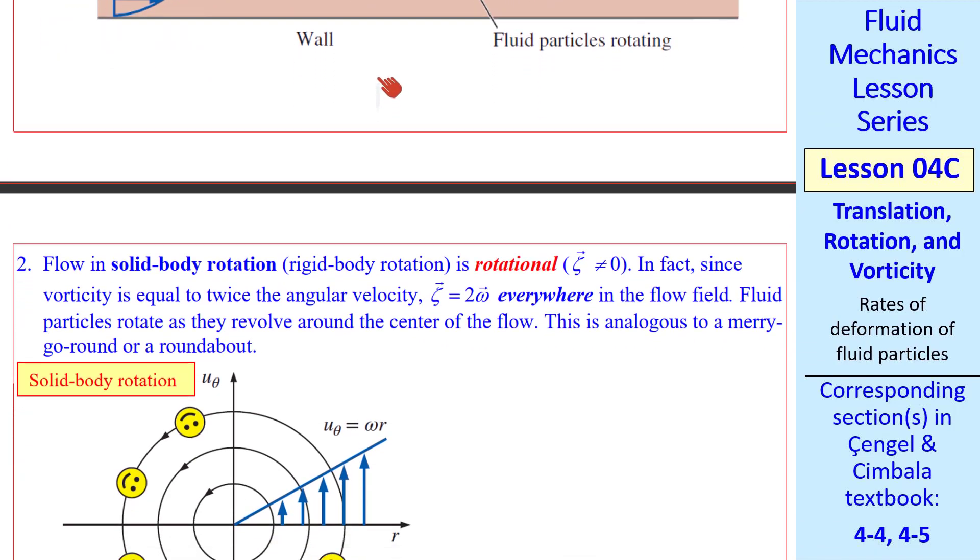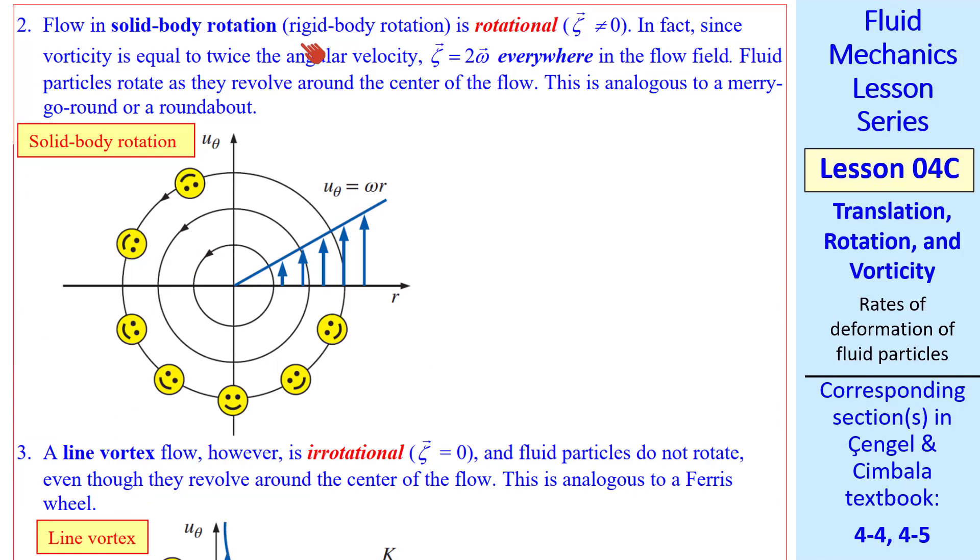For our second example, consider solid body rotation or rigid body rotation. This flow is rotational. In fact, zeta is 2 omega everywhere in the flow field. Vorticity is a constant. Our fluid particle rotates at the exact same rate as rigid body rotation. This is what the velocity field looks like. U theta is omega r. This would be analogous to a merry-go-round or a roundabout, where the people rotate as they revolve around in a merry-go-round, looking from the top.